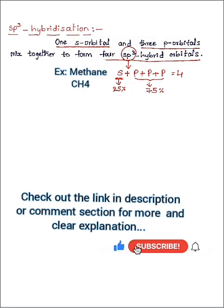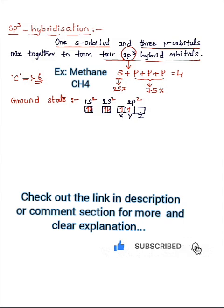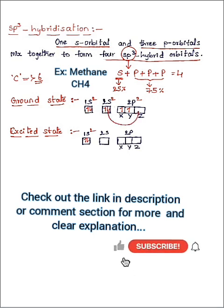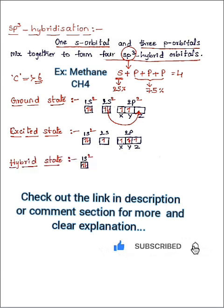We know that in methane, the central atom is carbon and its atomic number is six. Now let's consider the excited state of carbon atom. There are two electrons present in 1s orbital, while one electron in 2s jumps into the 2p z orbital. So this is the excited state of carbon atom.